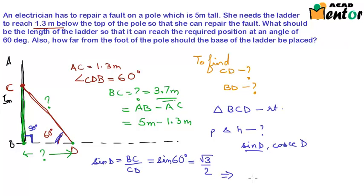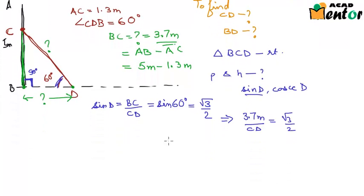So this equation becomes 3.7 meters by CD equal to root 3 by 2. From this we get CD equal to 2 times 3.7 meters by root 3. Root 3 can be taken as 1.73. 2 into 3.7 would be 7.4 meters by 1.73. So when we divide this, we get CD as 4.28 meters.